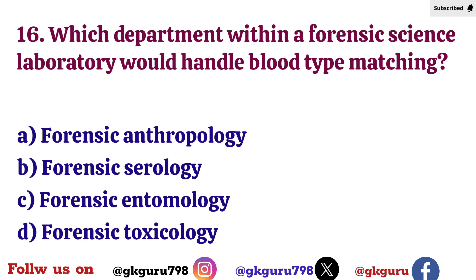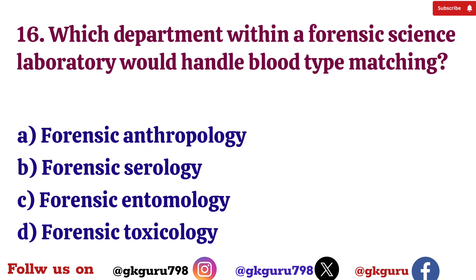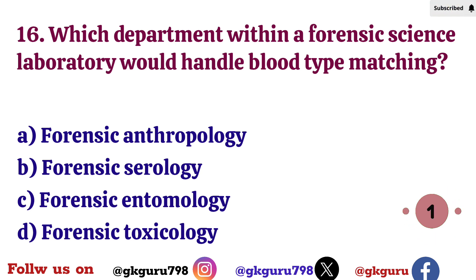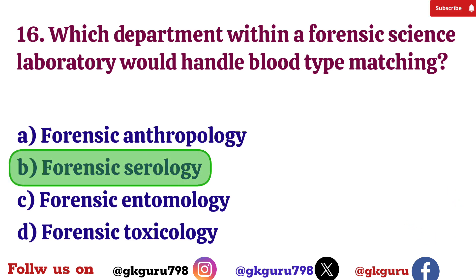Sixteenth question: Which department within a forensic science laboratory would handle blood type matching? Option A: Forensic anthropology. Option B: Forensic serology. Option C: Forensic entomology. Option D: Forensic toxicology. Correct answer: Option B — Forensic serology.